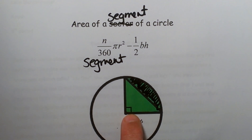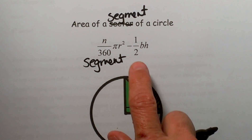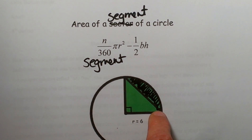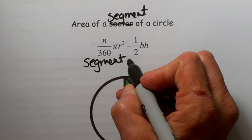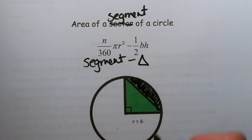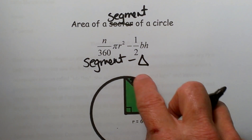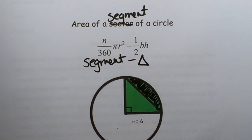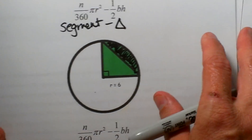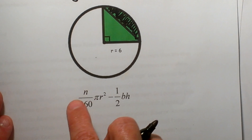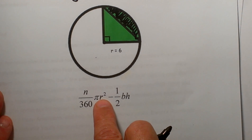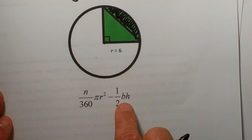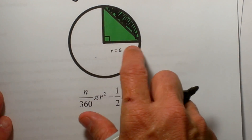In this case we have a right triangle, so it is going to be fairly easy. For triangles you have to use different formulas depending on what you have, but in general it is going to be one half base times height. So we take the sector area and subtract the area of the triangle, and what is left will be the segment. We need to know the angle measure n, the radius r, and the base and height inside the triangle.